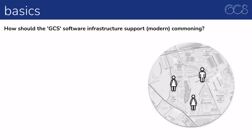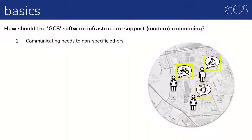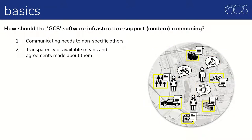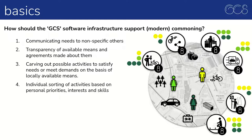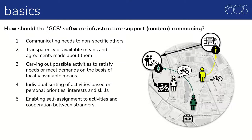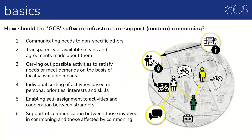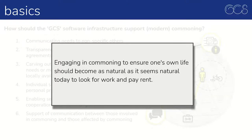How should the global commoning system software infrastructure support modern commoning? First, by communicating needs to nonspecific others. Second, by allowing transparency of available means and agreements made about them. Third, by carving out possible activities to satisfy needs or meet demands on the basis of locally available means. Fourth, by individual sorting of activities based on personal priorities, interests, and skills. Fifth, to enable the self-assignment to activities and cooperation between strangers. And sixth, to support communication between those involved in commoning and those affected by commoning. In conclusion, engaging in commoning to ensure one's own life should become as natural as it seems natural today to look for work or pay rent.